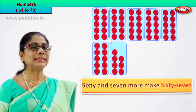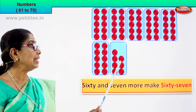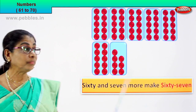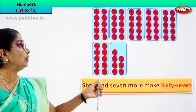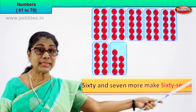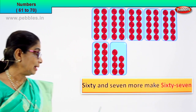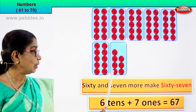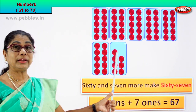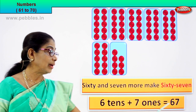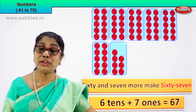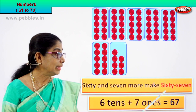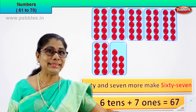Six tens plus seven ones equal to sixty-seven. Six tens, that is sixty, plus one, two, three, four, five, six, seven — seven more make sixty-seven is the number. And its name is sixty-seven.